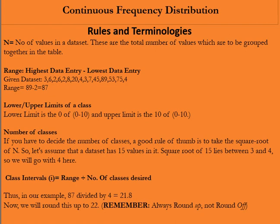Now there are different ways of determining the variables of a table. I am going to stick to the ones which I find the most reliable. In a continuous frequency distribution, n is the number of values or data points in a data set. The range is basically the highest data point minus the lowest data point of the data set. In the given data set, we see that 89 is the highest data point, 2 is the lowest and hence the range is 89 minus 2 which is equal to 87.